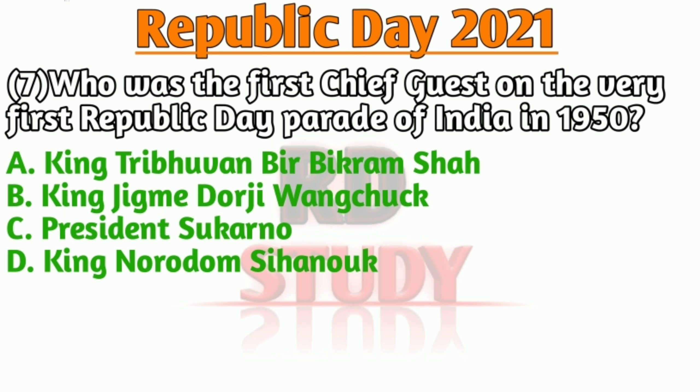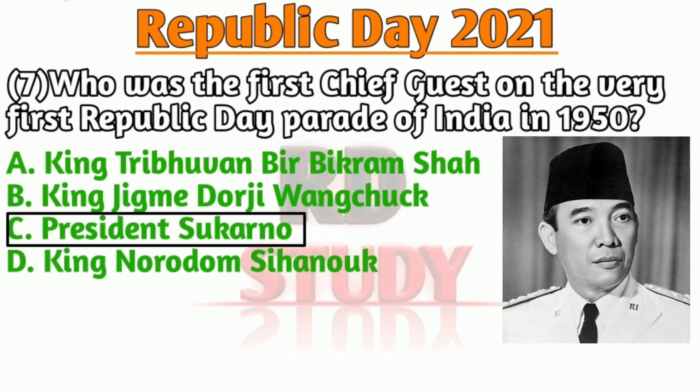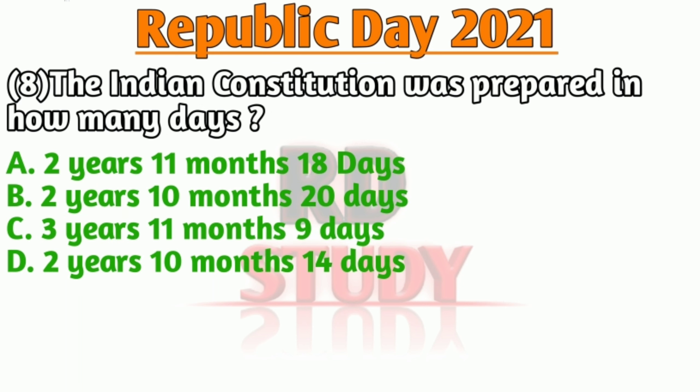Question number seven is: who was the first chief guest at the very first Republic Day parade of India in 1950? The right answer is option C — President Sukarno. The Indonesian President Sukarno was the first chief guest at the very first Republic Day parade of India.